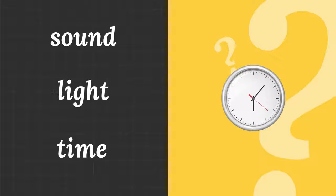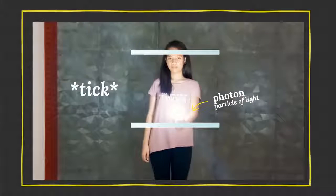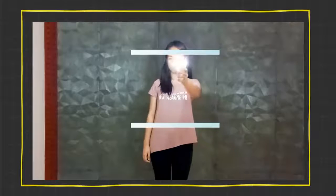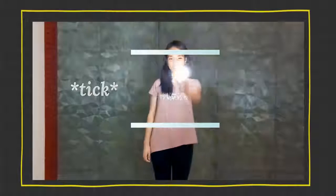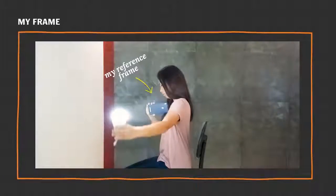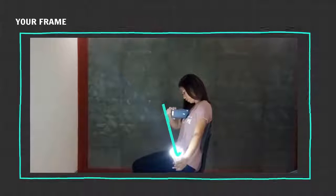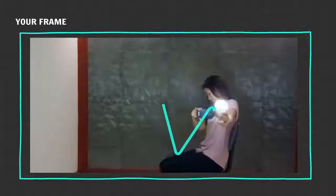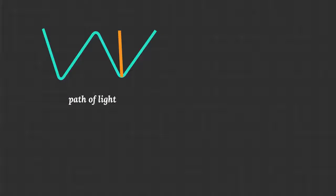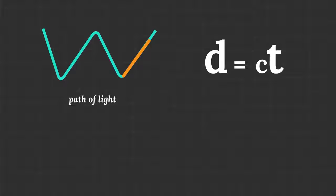Ever heard of time being relative? Consider a light clock with two mirrors and a photon bouncing between them. Every time the photon hits the bottom mirror, it's one tick of time. So, when I start moving, I see it travel in vertical lines. But from your stationary frame, it travels in Vs. Since the photon has to travel a longer distance and the speed of light is constant, each tick takes longer relative to you.